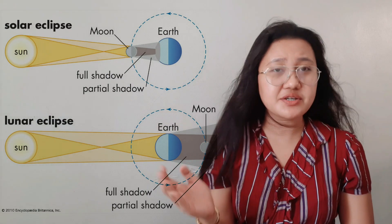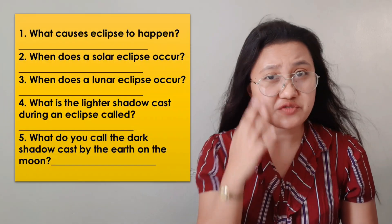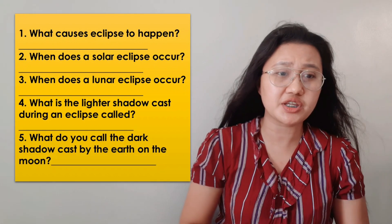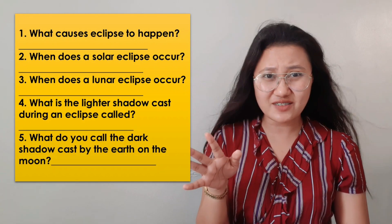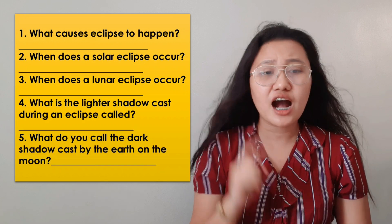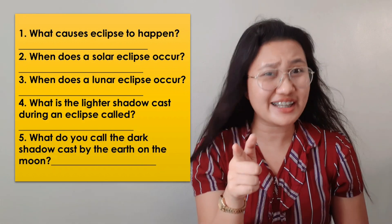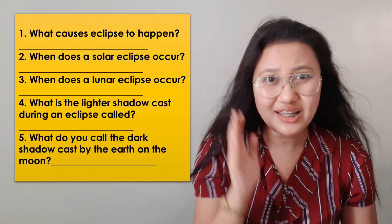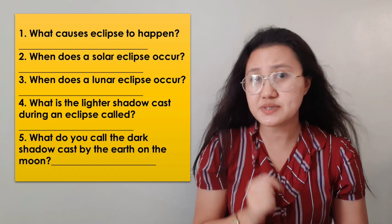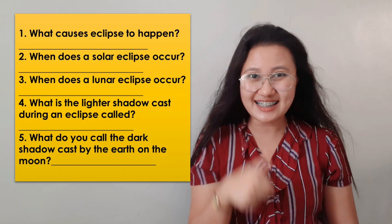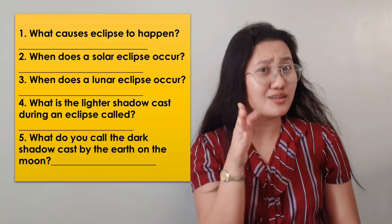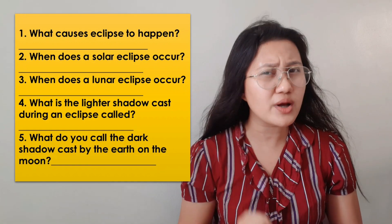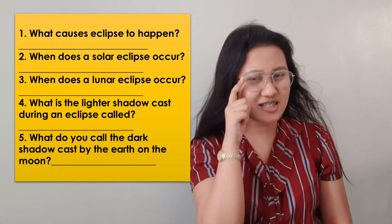For learning task number two, there are five questions. Using the diagram, answer: what causes an eclipse to happen? When does a solar eclipse occur? When does a lunar eclipse occur? What is the lighter shadow cast during an eclipse — umbra or penumbra? And what do you call the dark shadow cast by the Earth on the Moon? We already discussed which is light and which is dark, so you should know the answers.